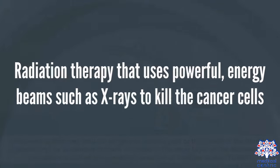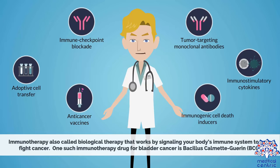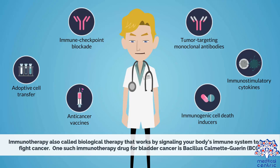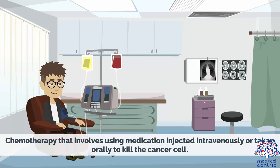Radiation therapy uses powerful energy beams, such as X-rays, to kill the cancer cells. Immunotherapy, also called biological therapy, works by signaling your body's immune system to help fight cancer. One such immunotherapy drug for bladder cancer is Bacillus Calmette-Guérin, or BCG. Chemotherapy involves using medication injected intravenously or taken orally to kill the cancer cells.